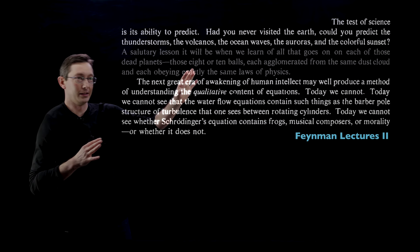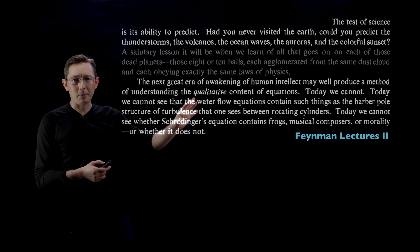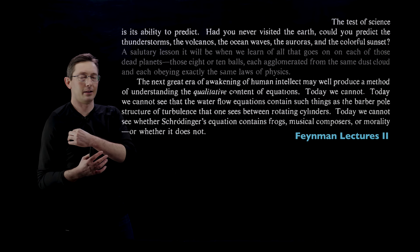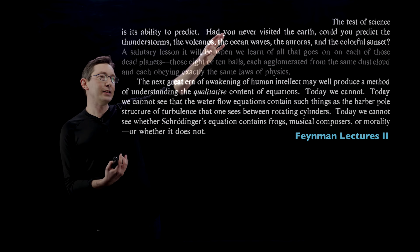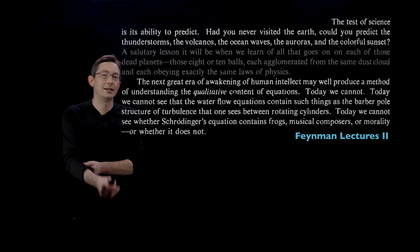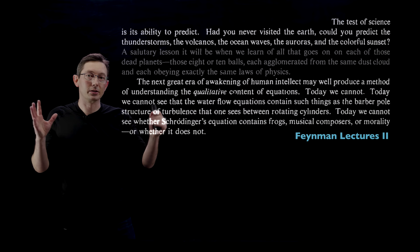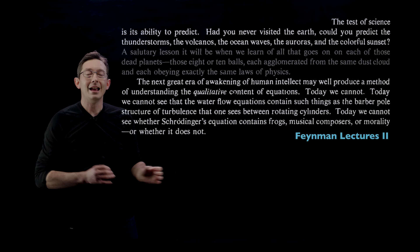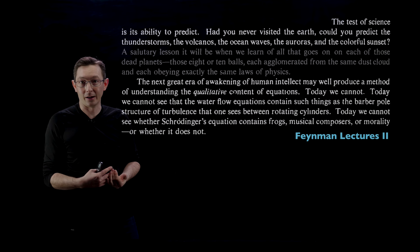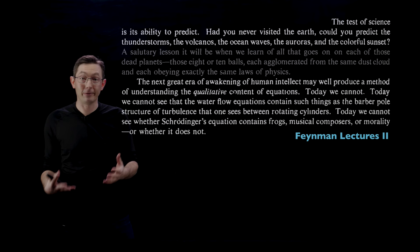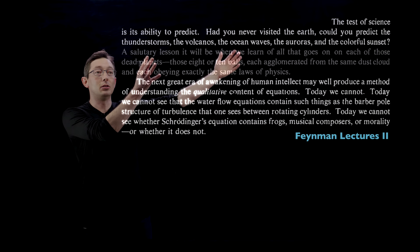I want to bring up this quote by Feynman from the Feynman lectures that has always stuck with me. The test of science is its ability to predict. Had you never visited the earth, could you predict the thunderstorms, the volcanoes, the ocean waves, the auroras, the colorful sunset? This is really a statement that even though we know the Navier-Stokes equations, even though I can write down the equations of fluid flows and simulate them in a computer, it is very hard for us humans to know before seeing a phenomena whether it exists or whether it's possible.